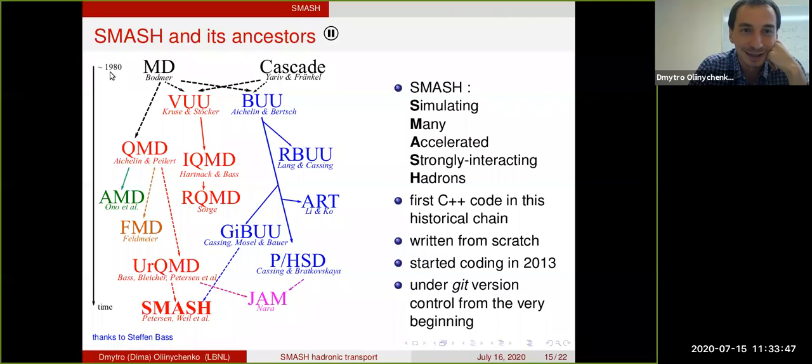It starts somewhere in the 1980s where the first QMD and BUU codes were created. You can see there is a long chain of codes, and SMASH is inheriting a lot of ideas from URQMD and GBUU. We were also looking at GEM, but inheriting ideas doesn't mean we copied the code. We wrote everything from scratch, and in all this historical chain, SMASH is the first C++ code. Everything else was written in Fortran.